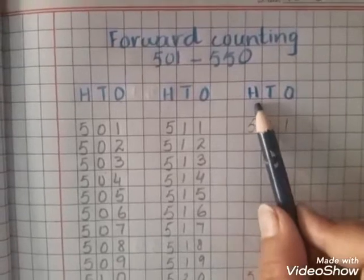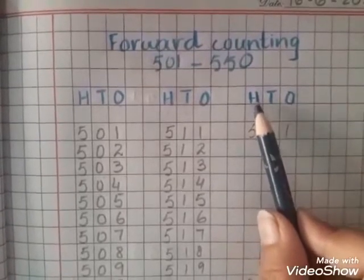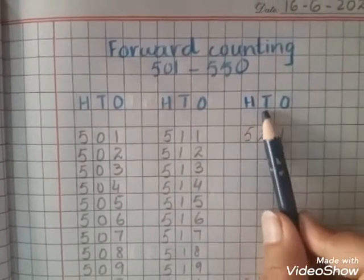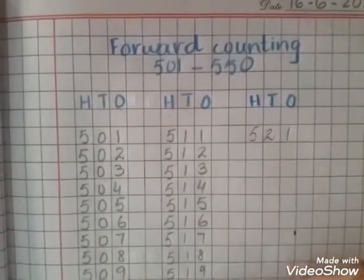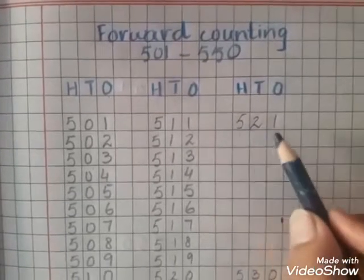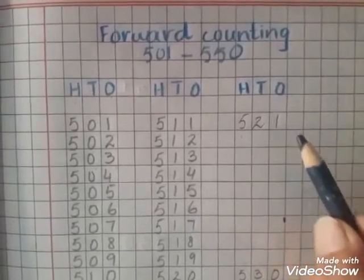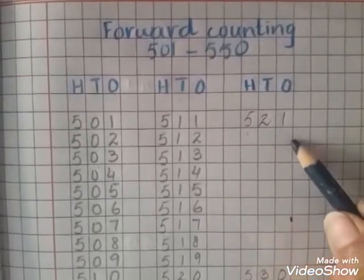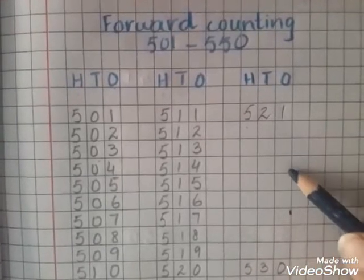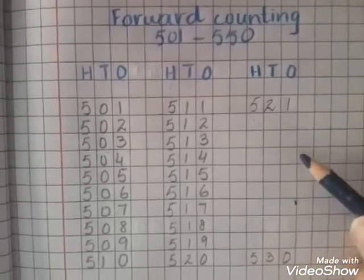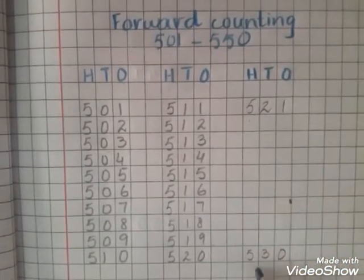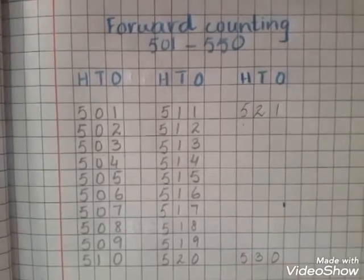Then again you put the heading like H T O — hundreds, tens, and ones. Then what line comes after 520? It's 521, then 522, 523, 524, and so on until 530.